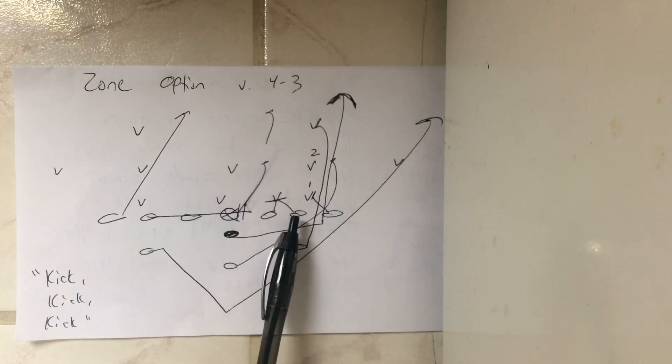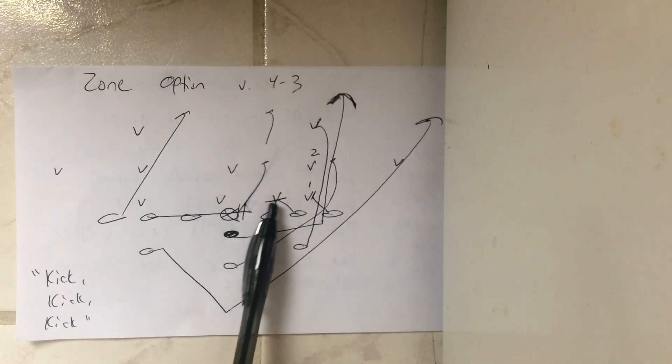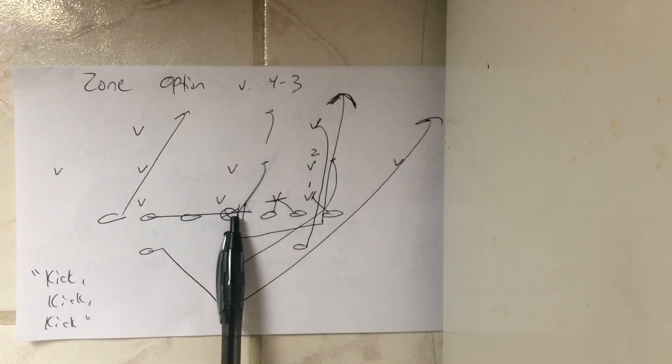With the offensive line, the double team starts at a 4-I. If there's no 4-I but a 3 technique, the guard makes a deuce call, and he and the tackle get their near knee through the crotch, near hand to the stomach, four-inch northbound steps from there.